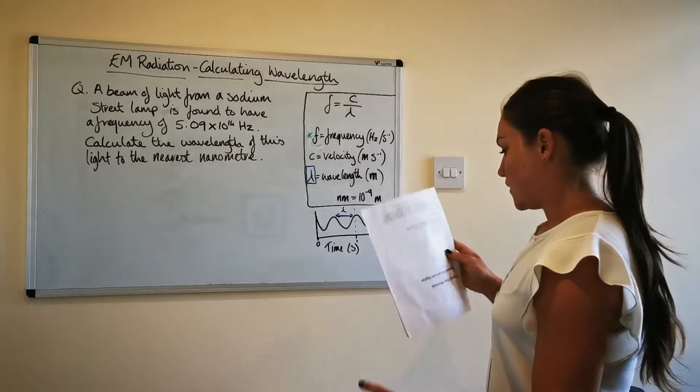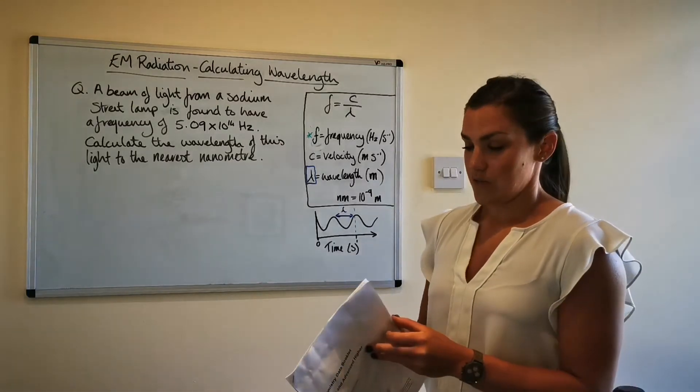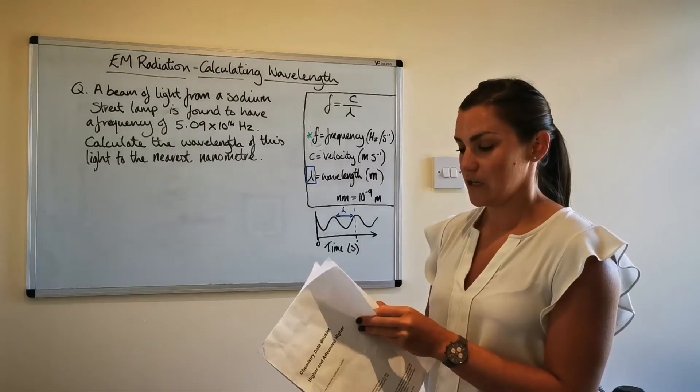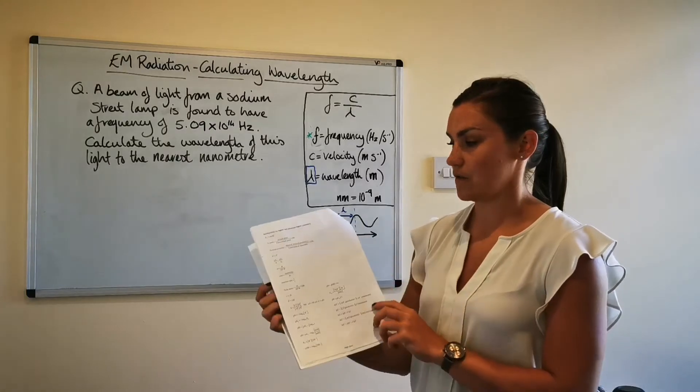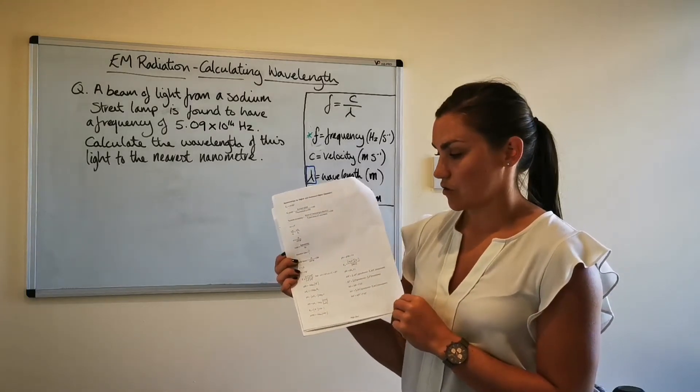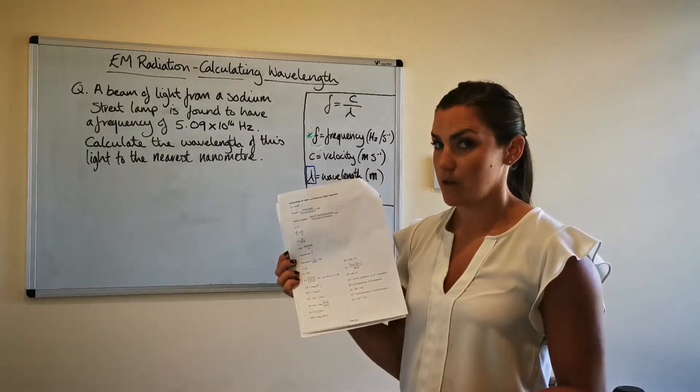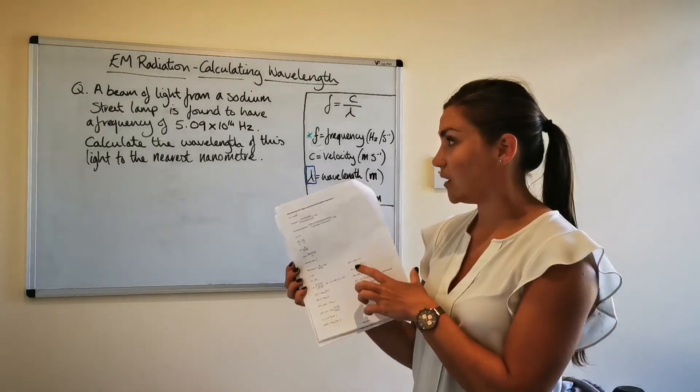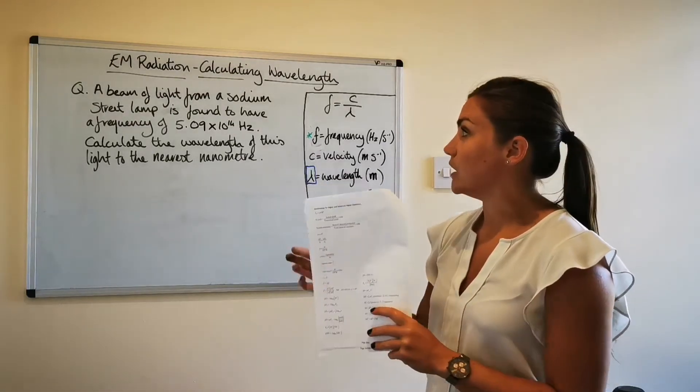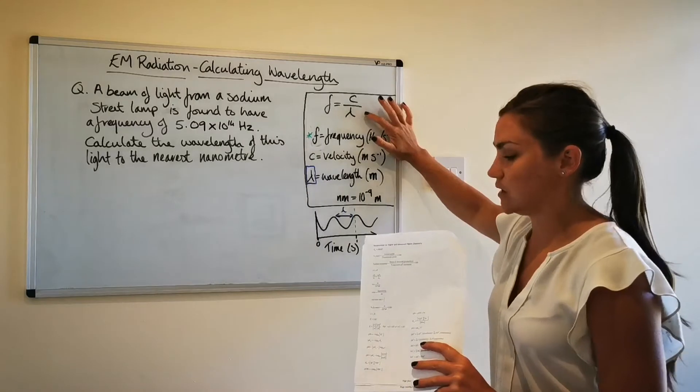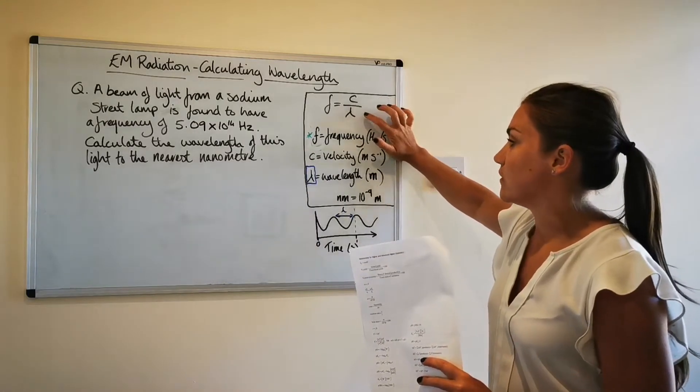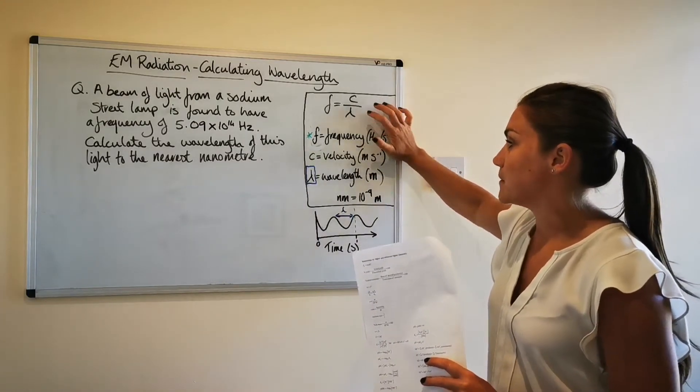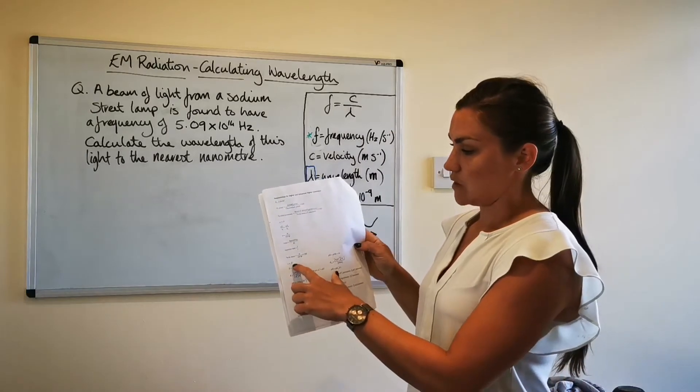So first thing you'll need your data booklet whenever you're doing any of these calculations and the two pages you'll need is the first one is the page after the contents page which has got all of the equations that you're given. So the equation that we need for calculating wavelength is the one that contains wavelength which wavelength is given by this Greek letter lambda so that's halfway down this page.